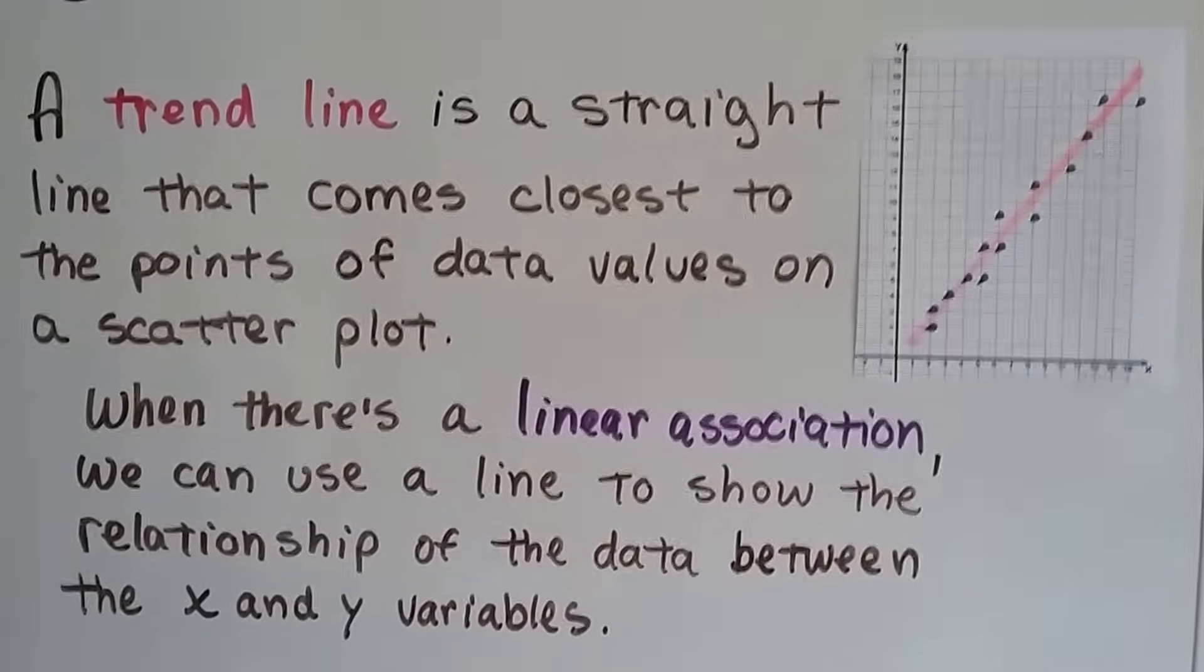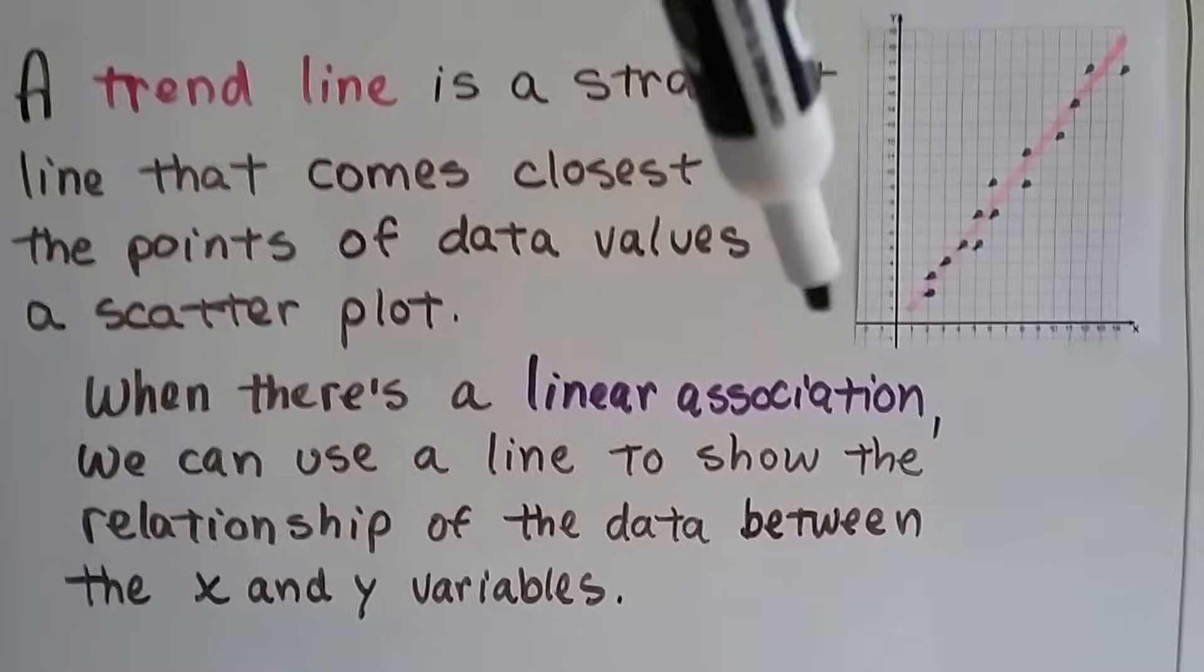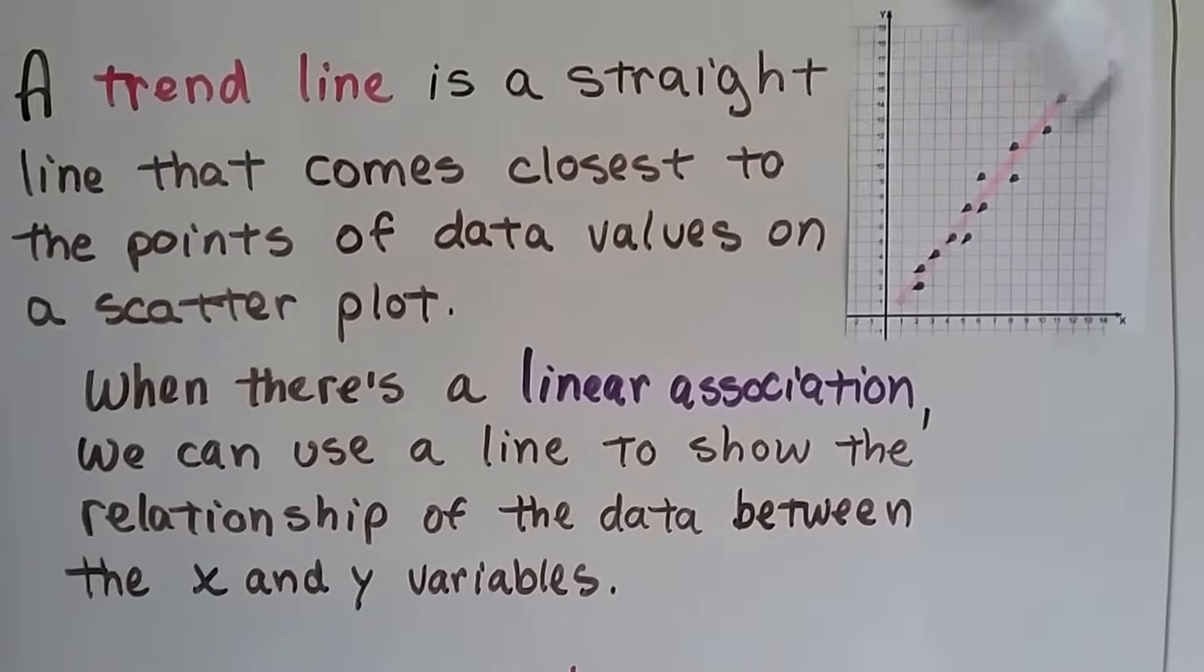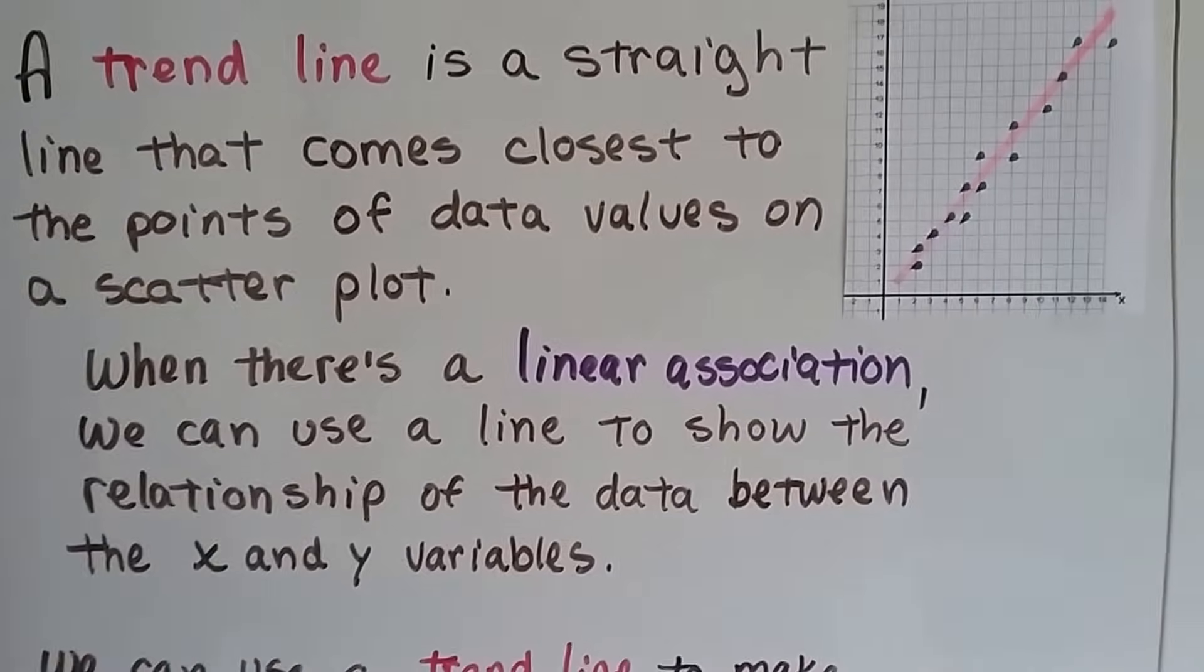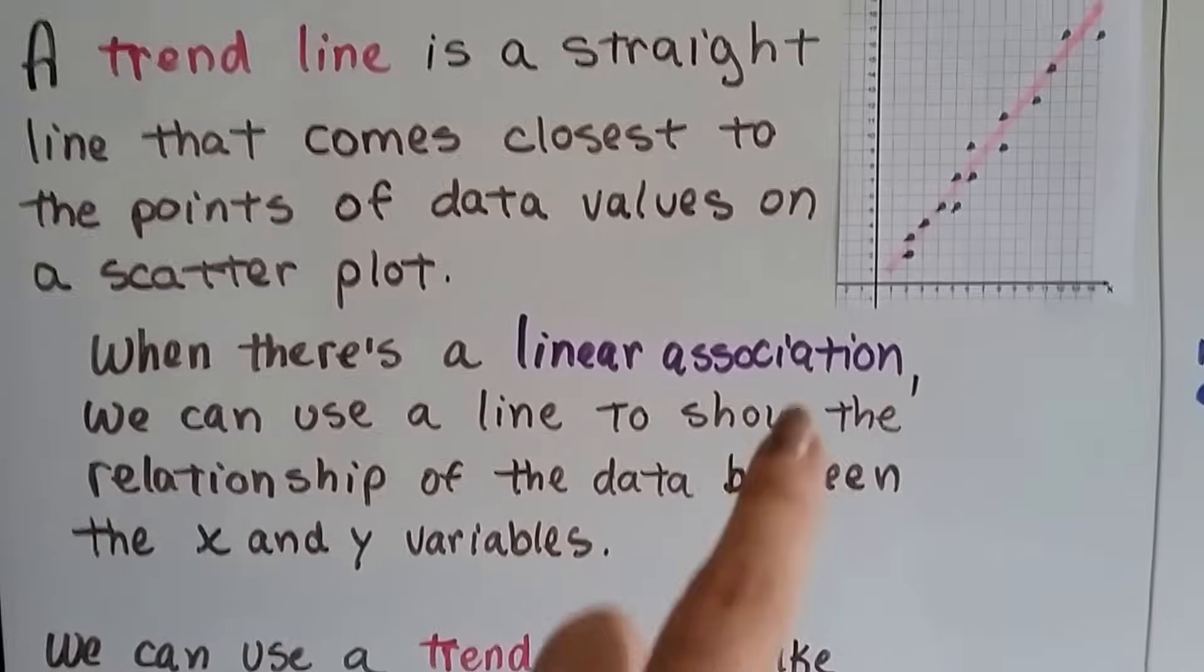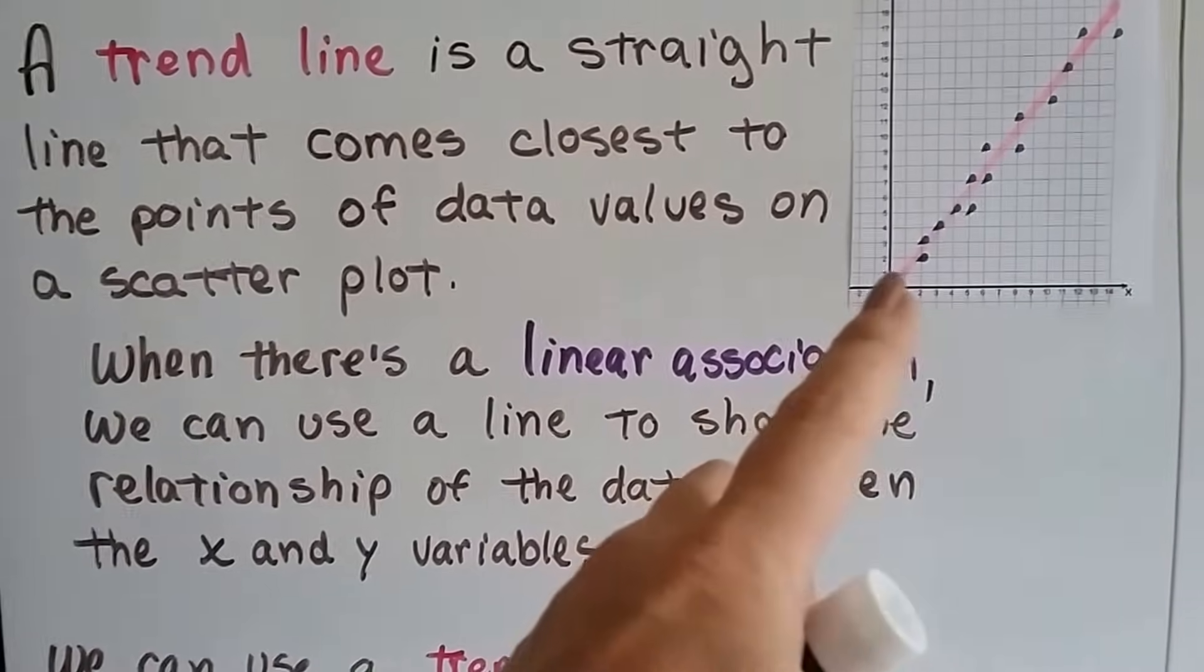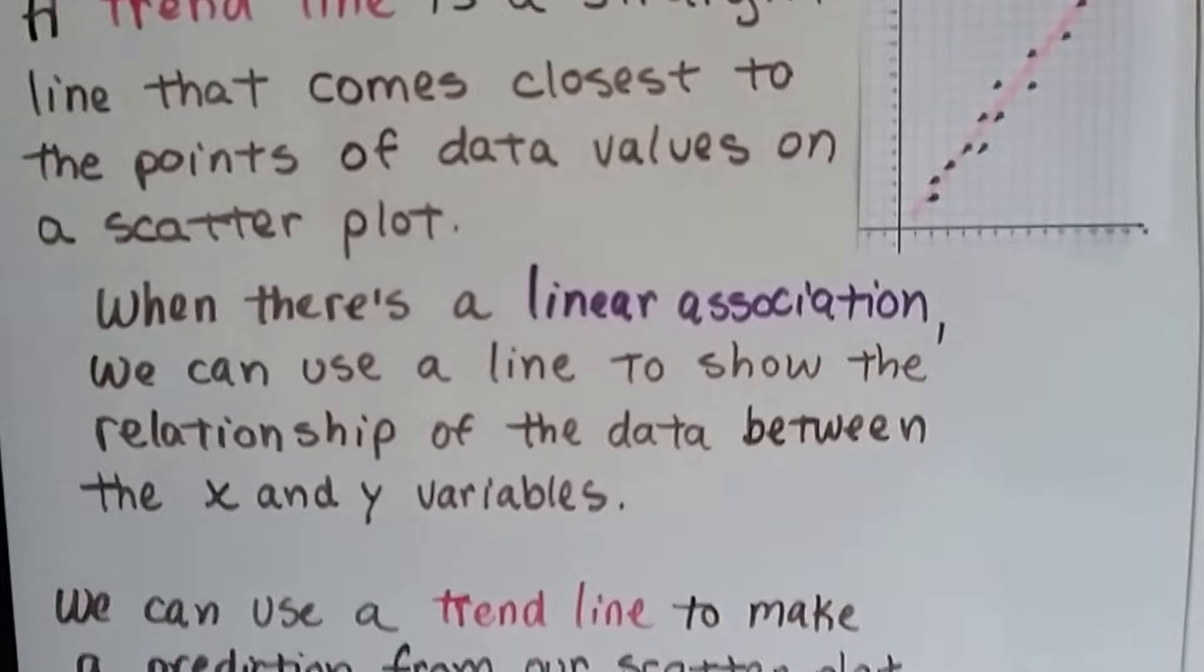So a trend line, as we said in the last video, is a straight line that comes closest to the points of the data values. See my pink trend line coming right up in between these data values? And when there's a linear association, we can use a line to show the relationship of the data between x and y variables. We want to make sure there's as many on top as on bottom, so that the line's going right up the middle.